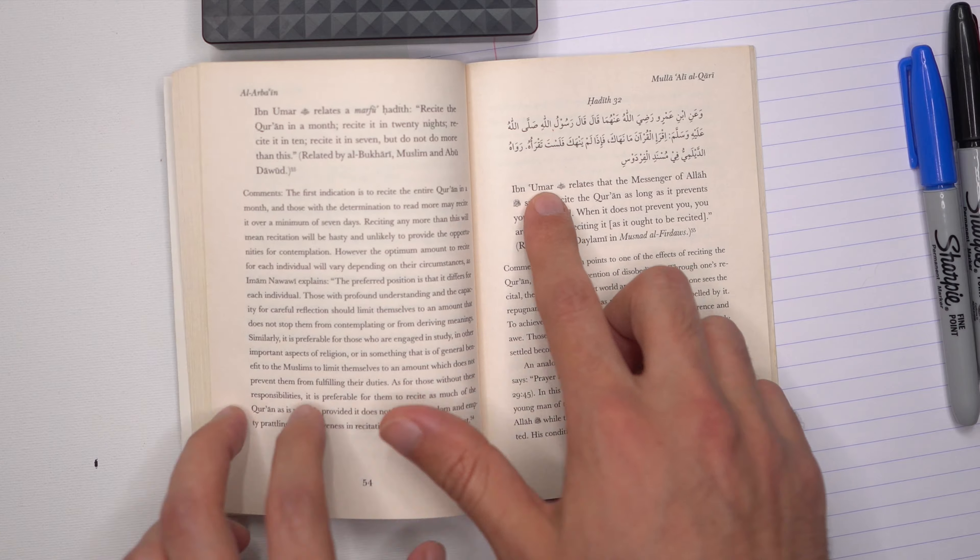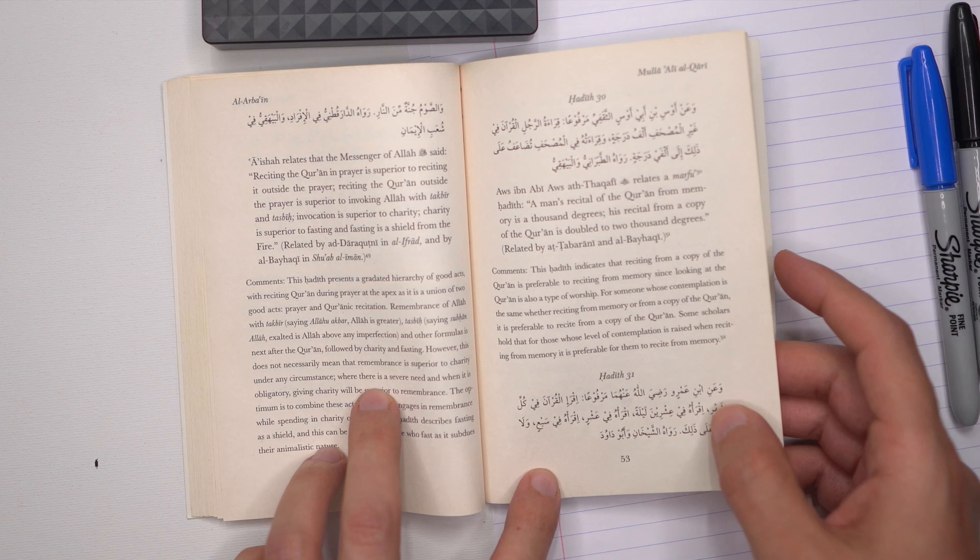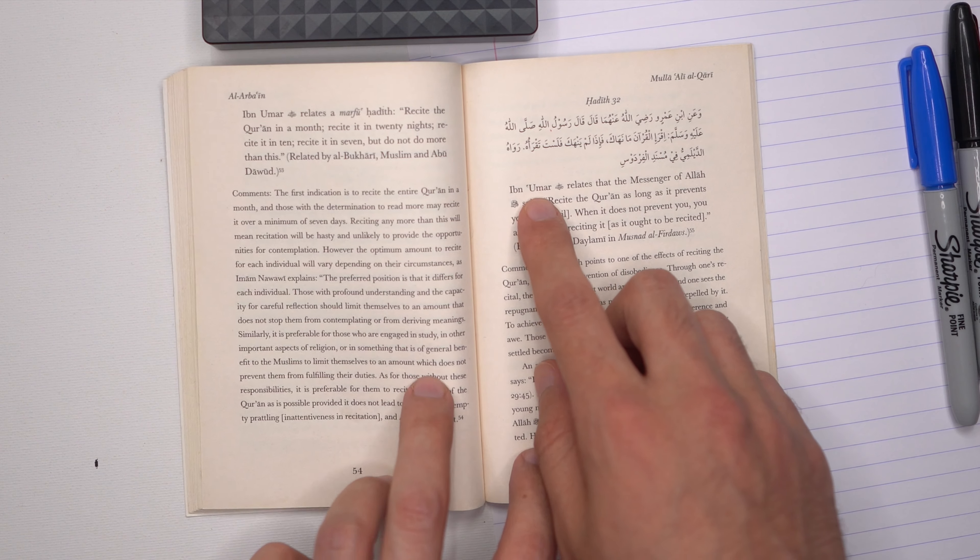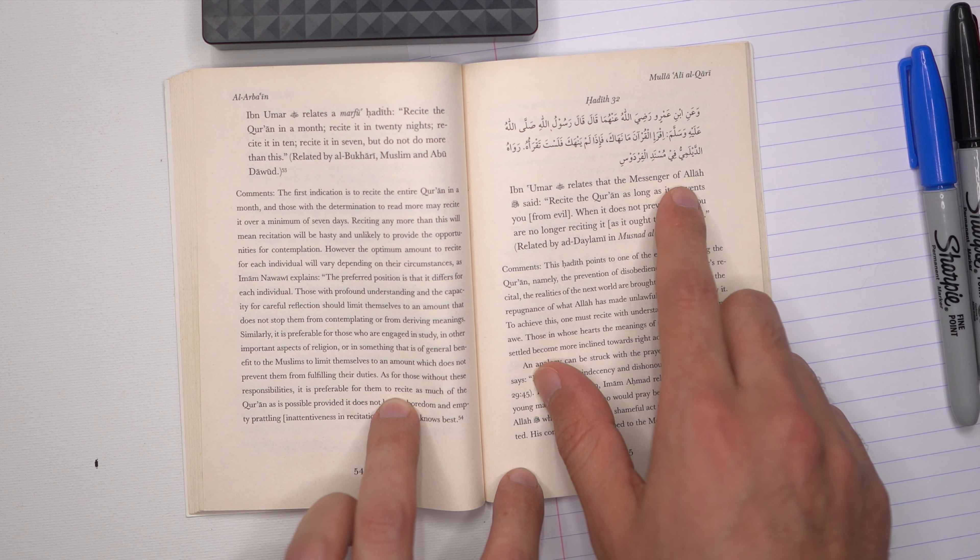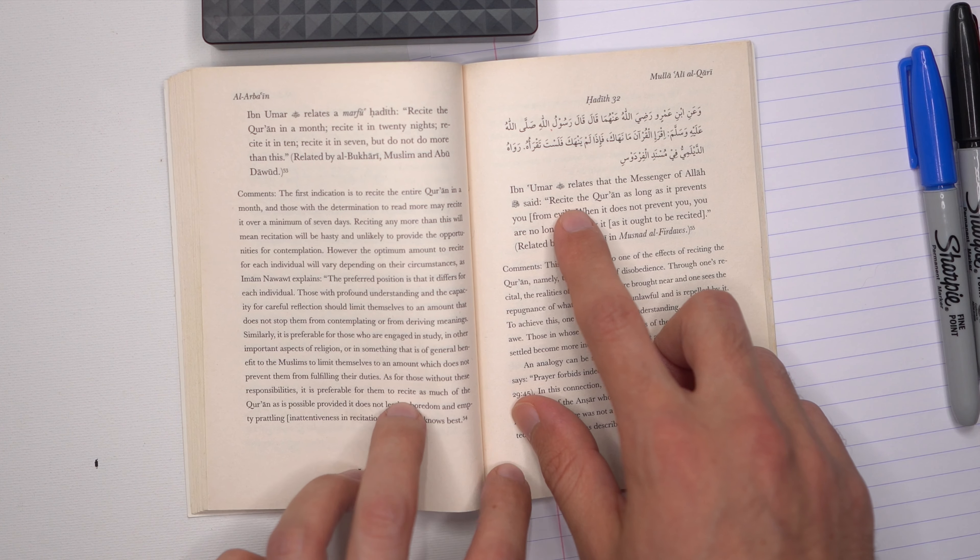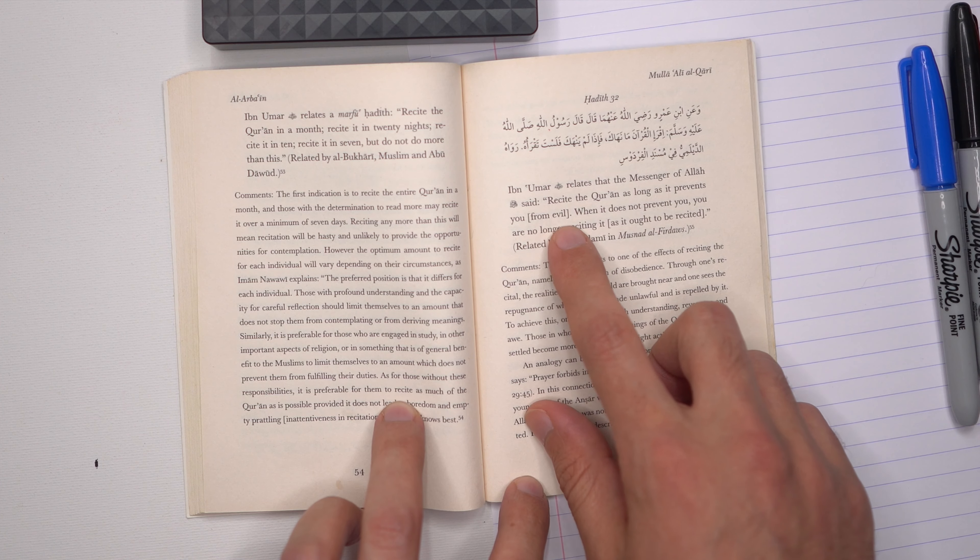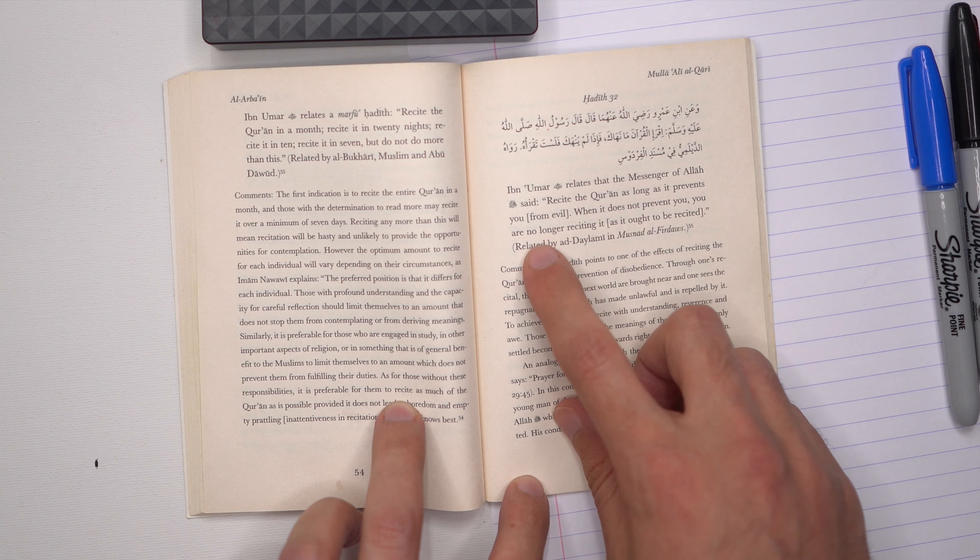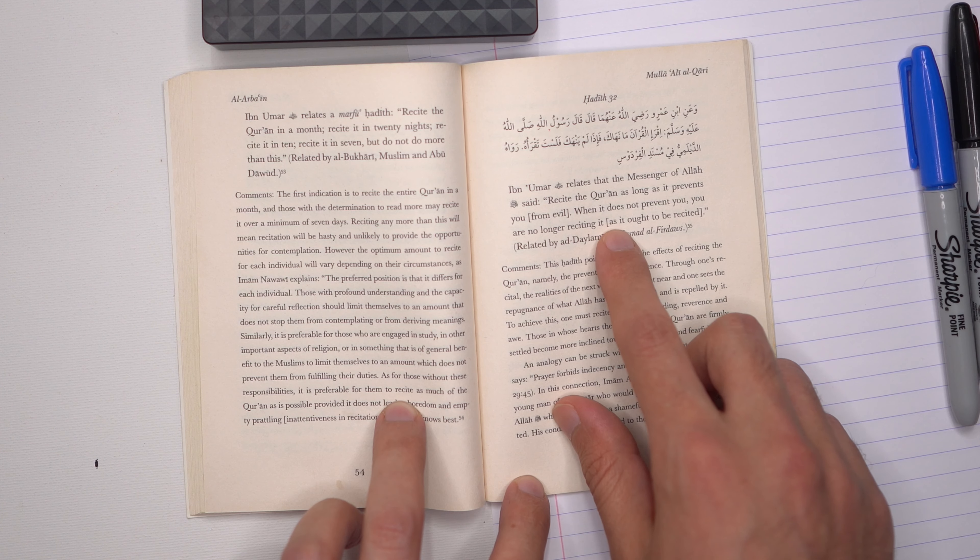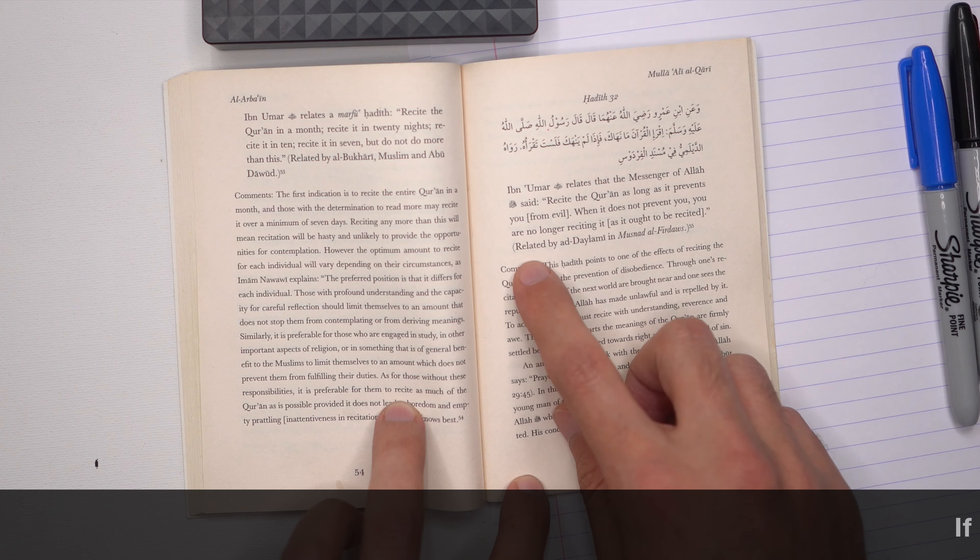Ibn Amr relates that the Messenger of Allah said: Recite the Qur'an as long as it prevents you from evil. When it does not prevent you, you are no longer reciting it as it ought to be recited. Related by Dailami.